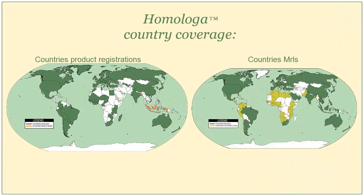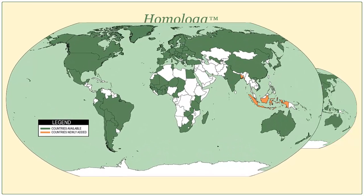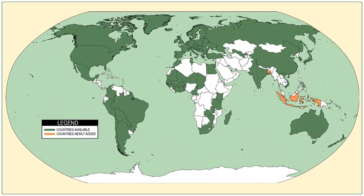On the HOMOLOGA map of countries' product registrations, you can see the countries where information is available. For all the countries marked in green, product registration information is available. The countries marked in orange are new product registrations.